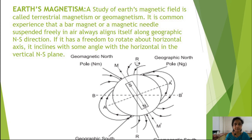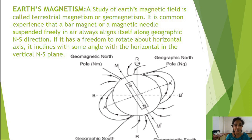A study of earth's magnetic field is called terrestrial magnetism or geomagnetism. It is common experience that a bar magnet or a magnetic needle suspended freely in air always aligns itself along the geographic north-south direction. If it has freedom to rotate about a horizontal axis, it inclines at some angle with the horizontal in the vertical north-south plane.